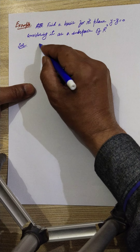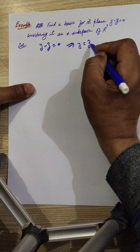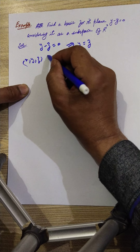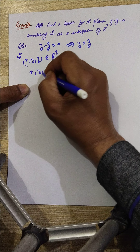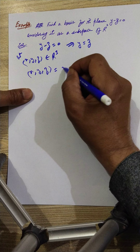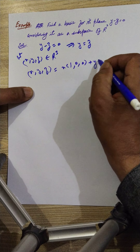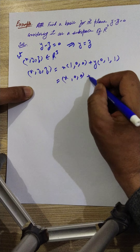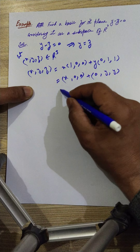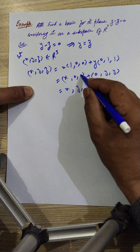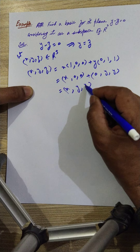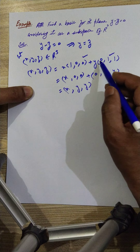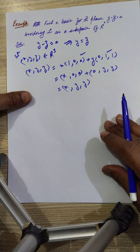For the solution: if Y minus Z equals zero, then Y equals Z. A general vector in this subspace can be written as x times (1, 0, 0) plus y times (0, 1, 1). So the spanning vectors are (1, 0, 0) and (0, 1, 1), and these form a basis for the subspace.